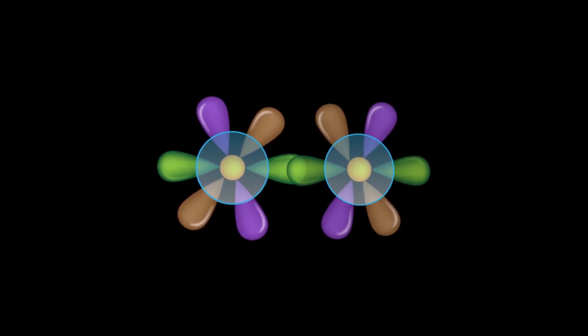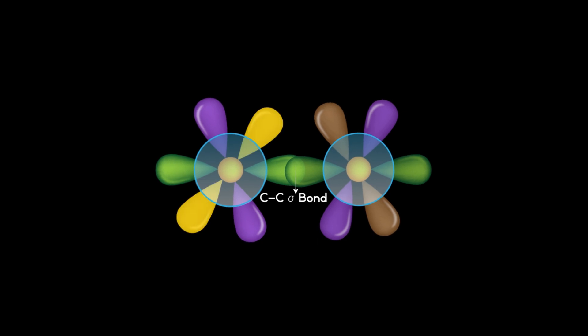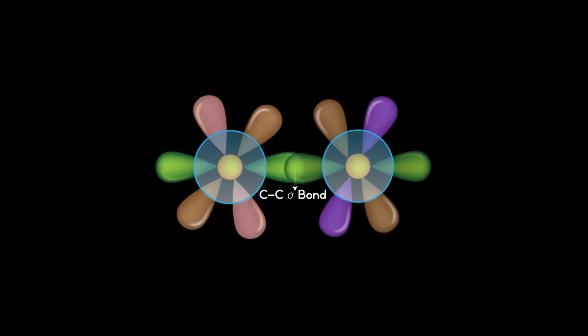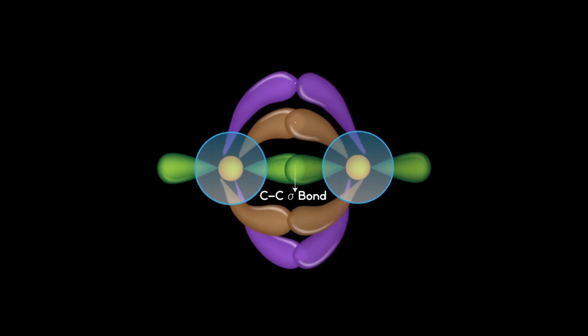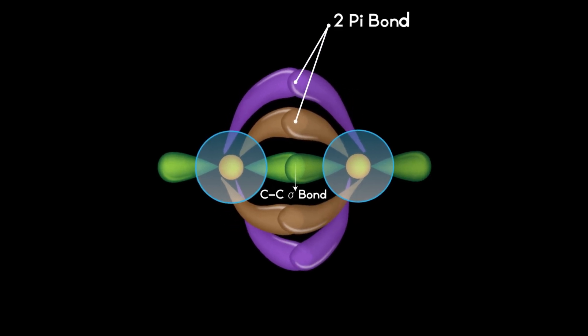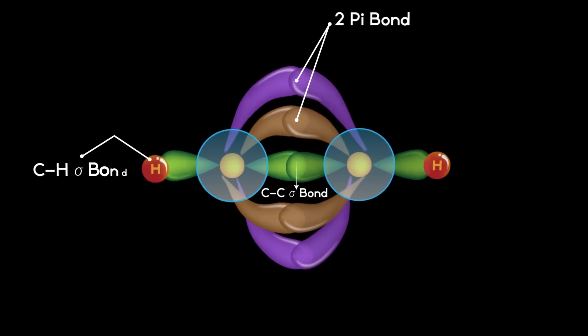Now consider another hybridized carbon atom and allow them to join. When they join, they form a carbon-carbon sigma bond. The unhybridized 2py and 2pz orbitals overlap and form two pi bonds between the carbon atoms. The remaining hybrid orbitals form carbon-hydrogen sigma bonds.